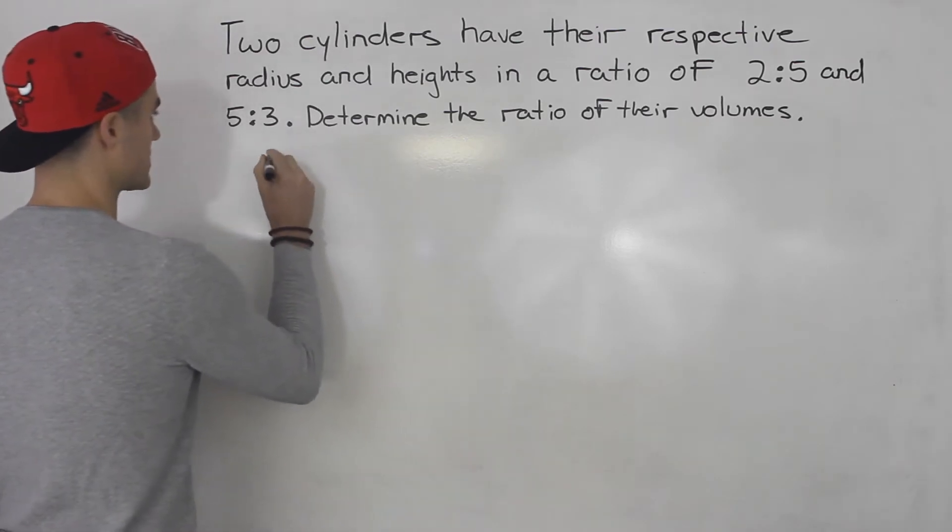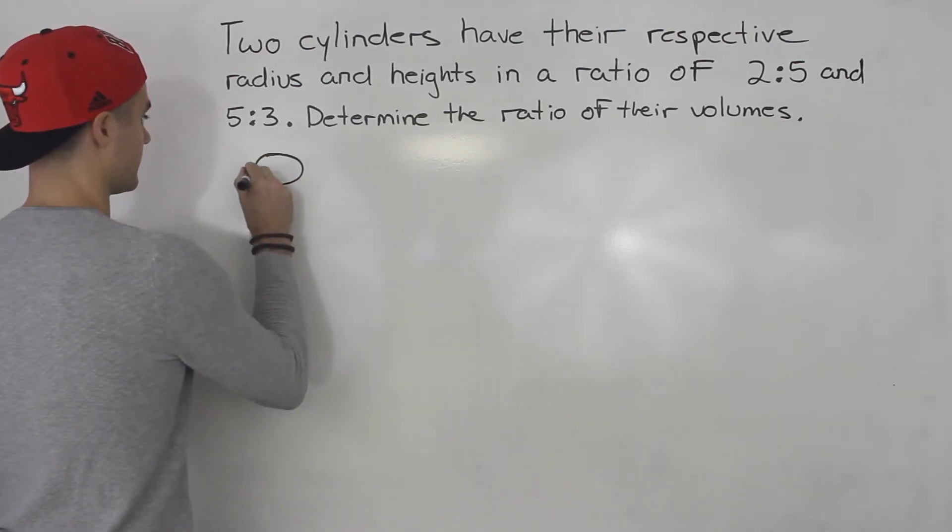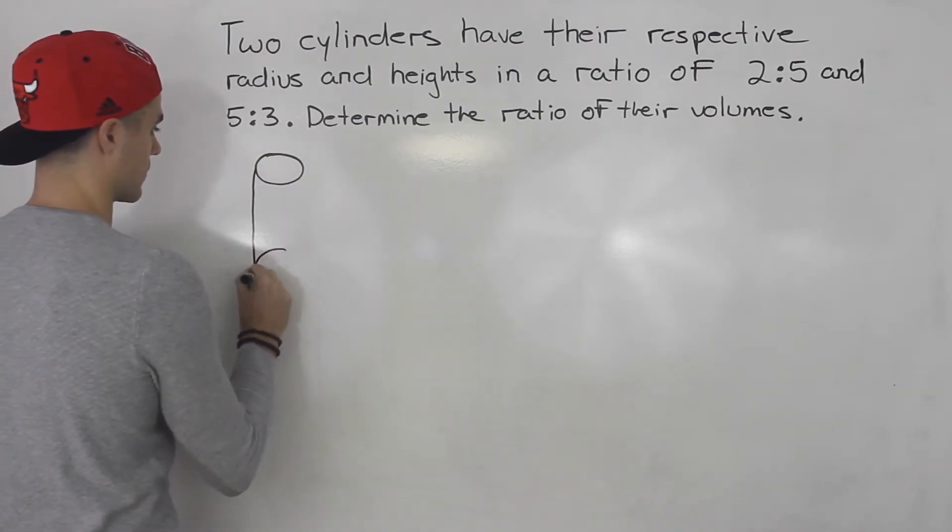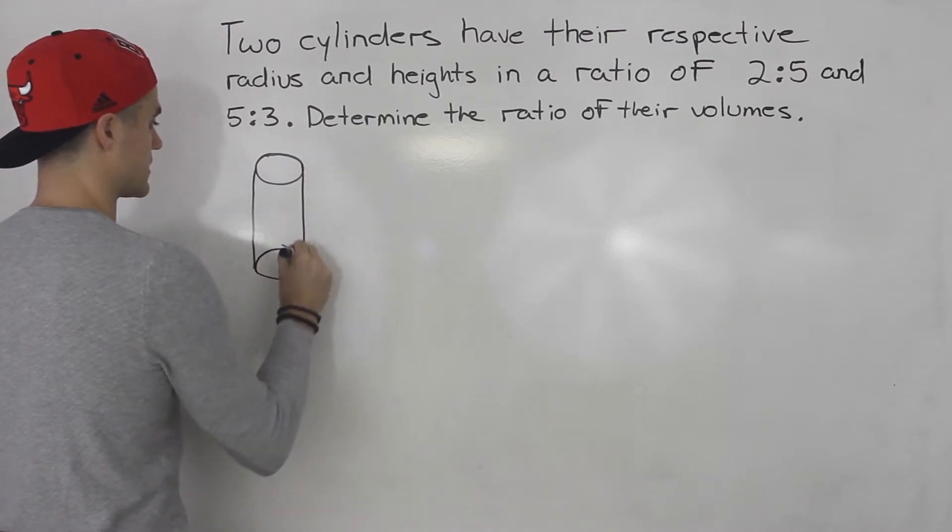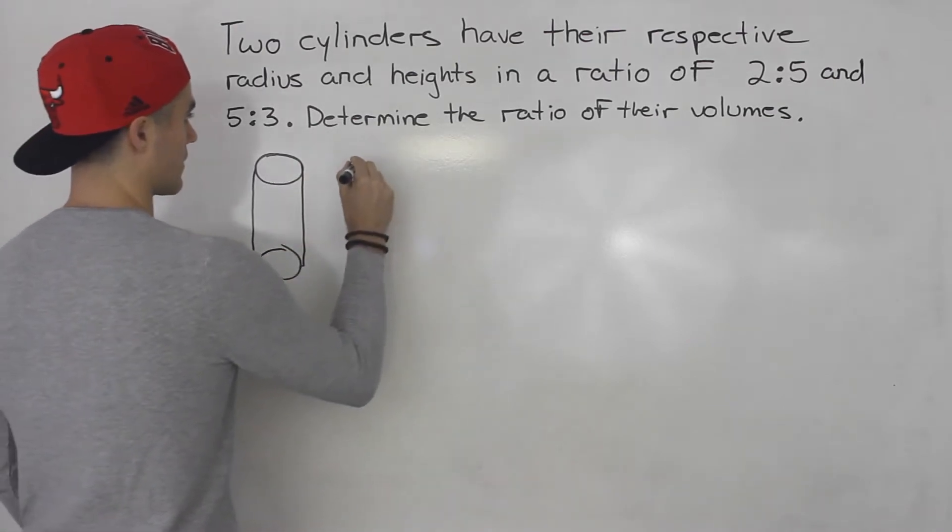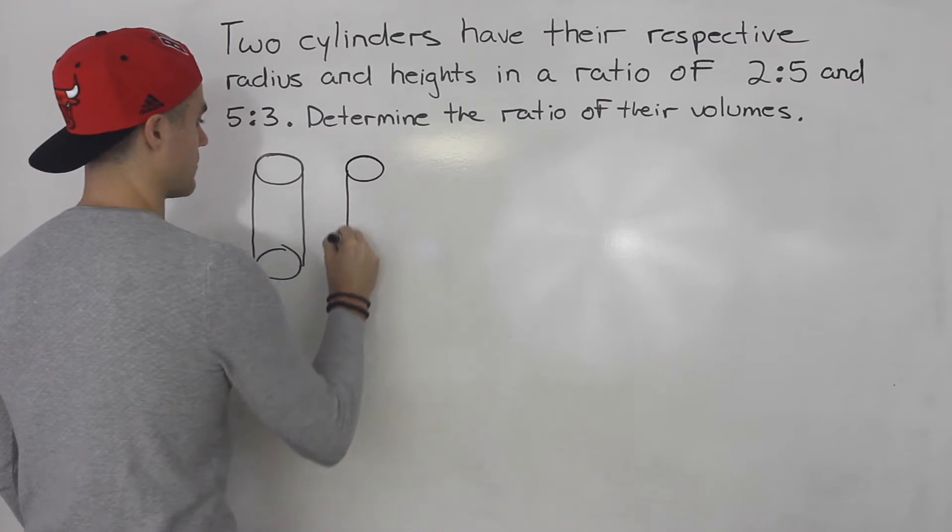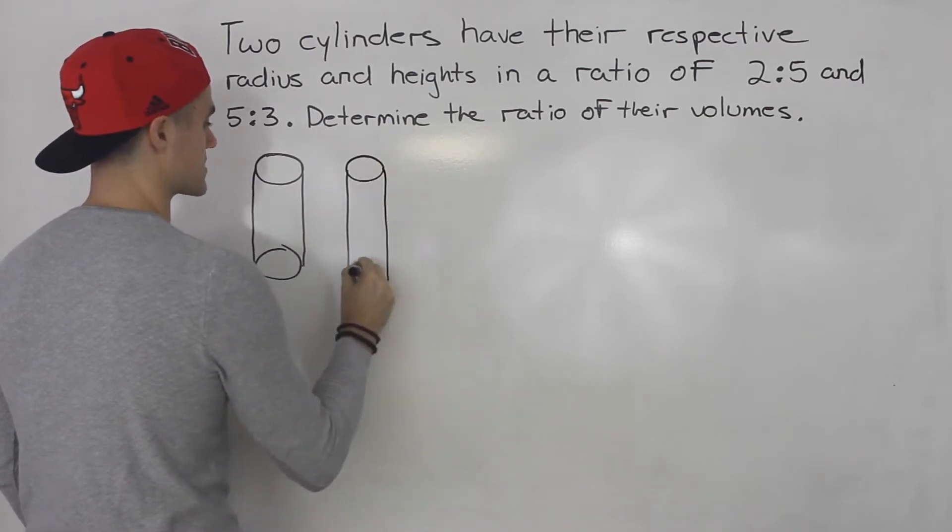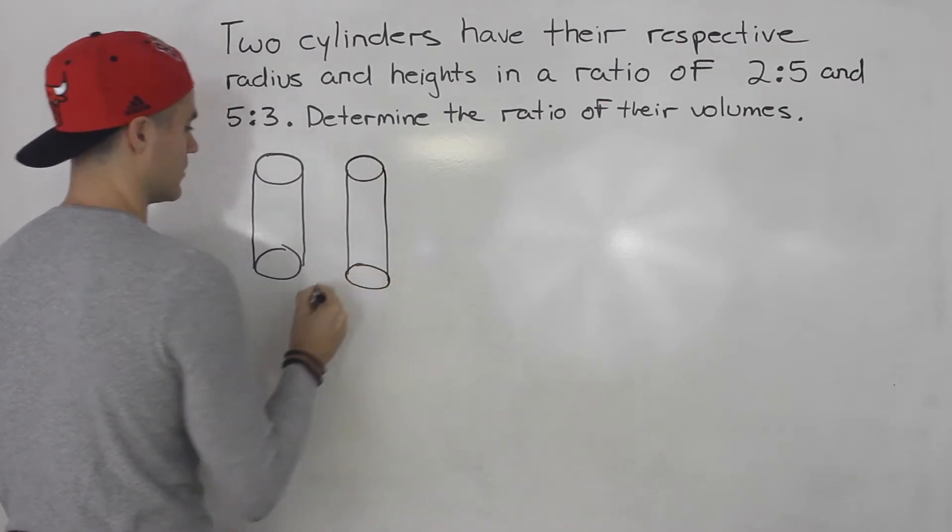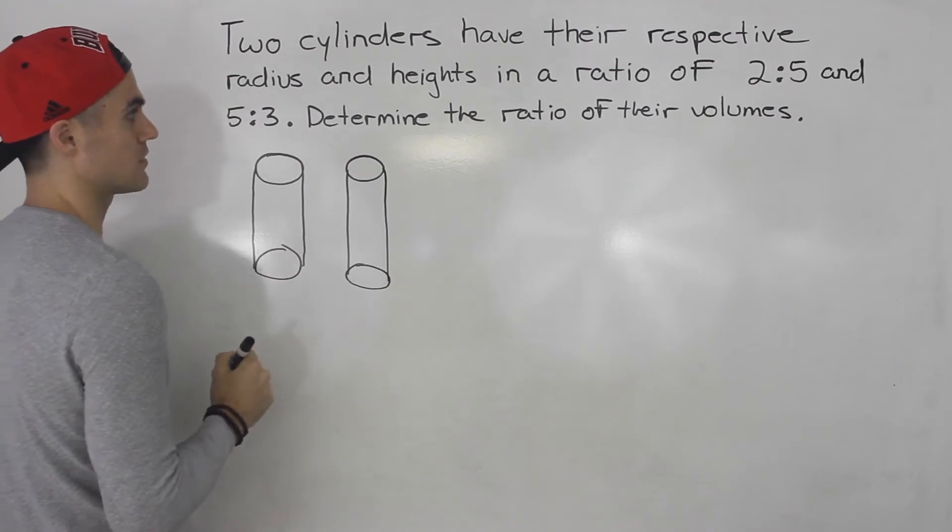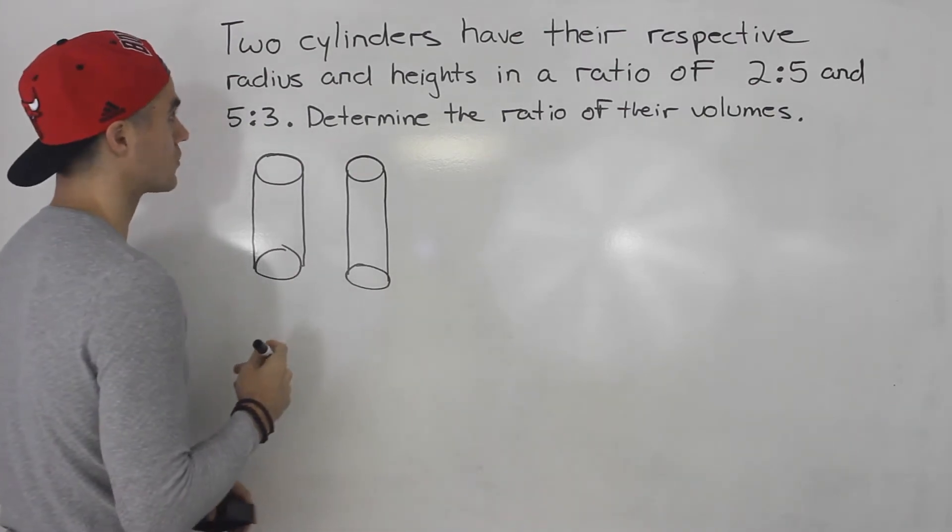So showing this in a diagram, let's call this cylinder 1 here and then this is cylinder 2. Now by the way these are not going to be to scale at all, but I just want to show this visually before we get into the actual calculations.